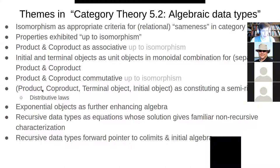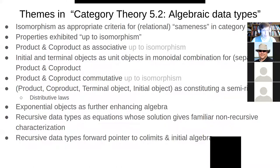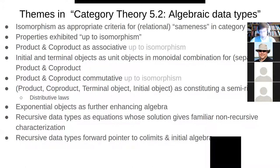If you consider products, co-products, terminal objects, and initial objects at a mathematical level, these form what's called a semiring or a rig — a ring without a negative. So you can multiply and add, and you have well-defined properties. It turns out that some of the properties are in the form of familiar distributive laws: A times (B plus C) is the same as A times B plus A times C. We'll see many examples of those in just a minute.